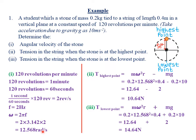Similarly, you can also find the period and use ω = 2π/T. The period is the time taken to make one revolution. So if 120 revolutions are made in 60 seconds, you could find the time taken to make one revolution, which would be the period of that particular rotation.